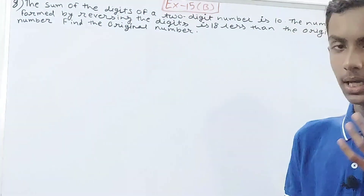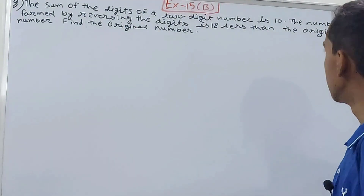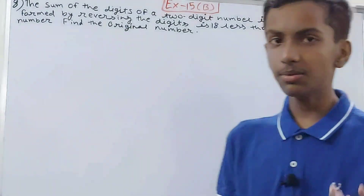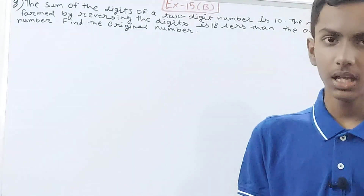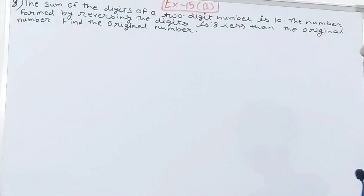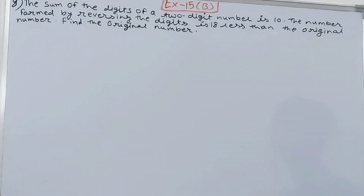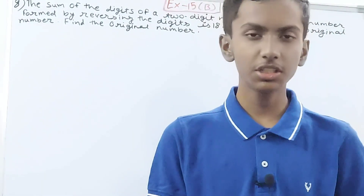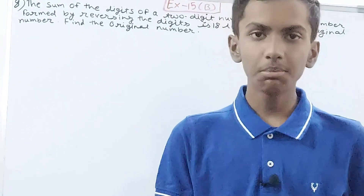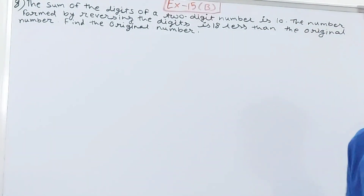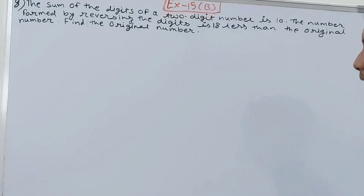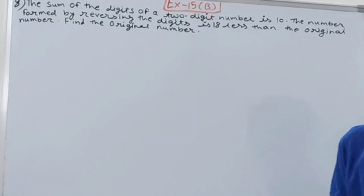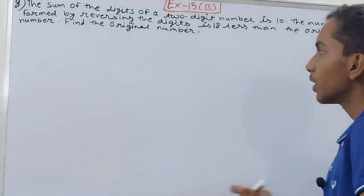So the problem is saying that the sum of the digits of a two-digit number is 10 — that means the number is between 10 and 99. When we reverse the digits of that number, the new number is 18 less than the original number. Less means we subtract. We need to find the original number.